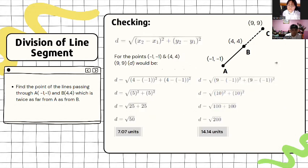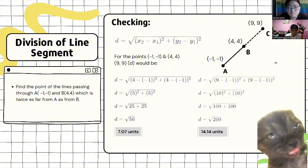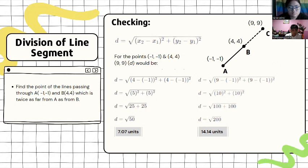To further check our answers if it is correct, we will determine the distance between the 3 points. For points (-1, -1), (4, 4), and lastly (9, 9), the distance of (-1, -1) to (4, 4) is 7.07 units, which further clarifies that our statement is correct.